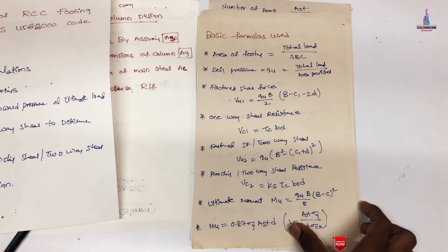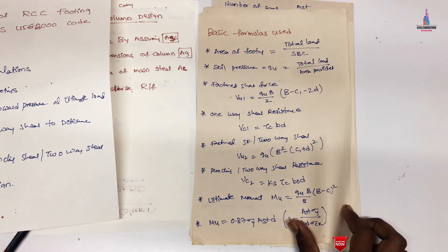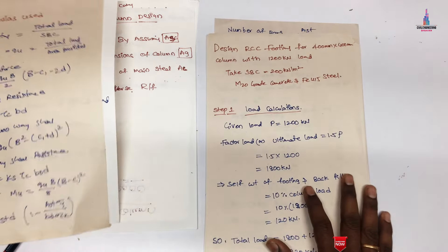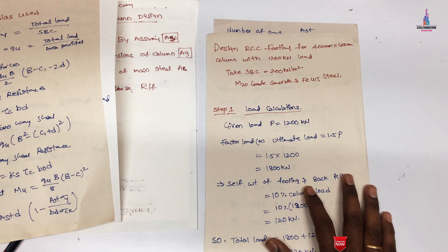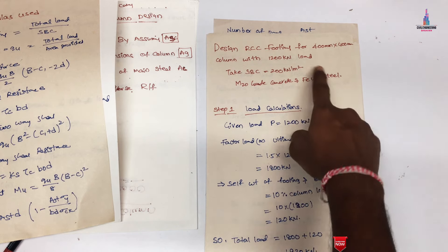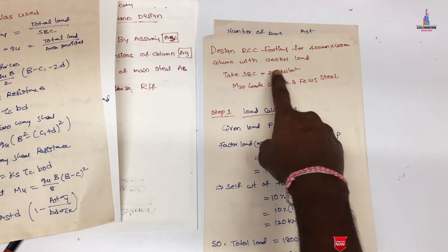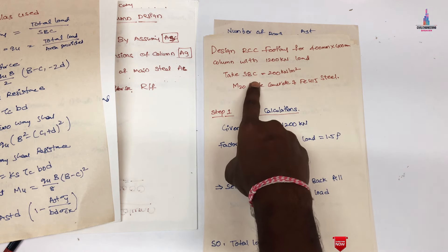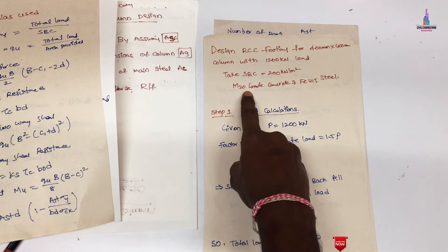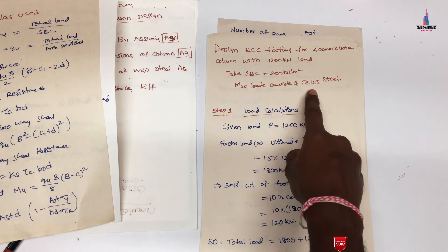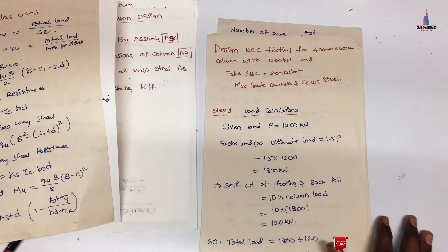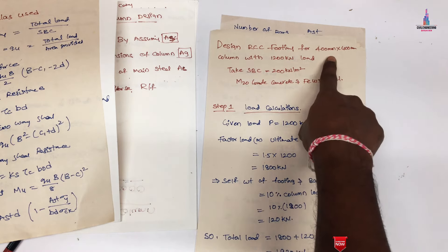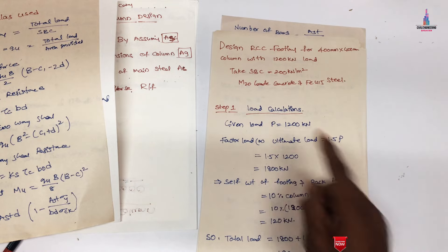Now I will explain how to calculate isolated footing design as per IS456:2000. The problem: design an RCC footing for a 400 × 400 mm column with a 1200 kN load, soil bearing capacity of 200 kN/m², M20 grade concrete, and Fe415 grade steel.